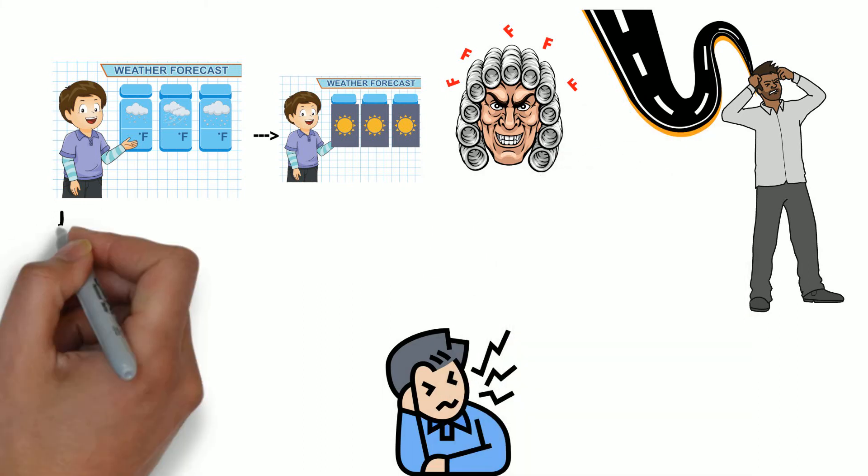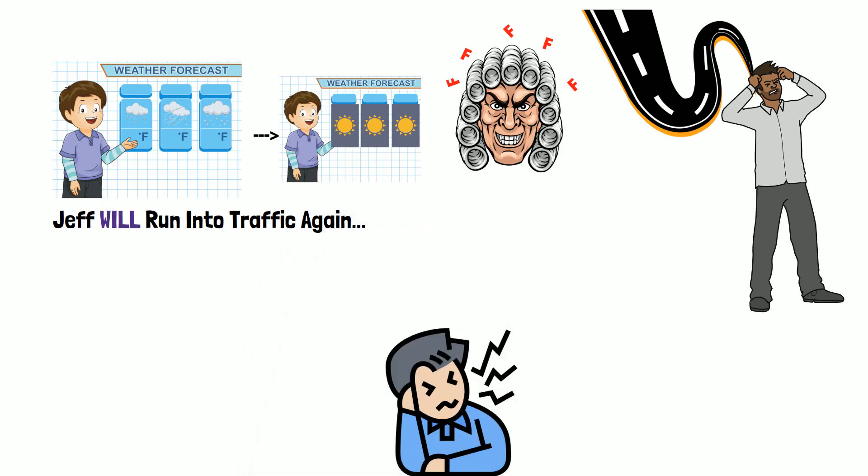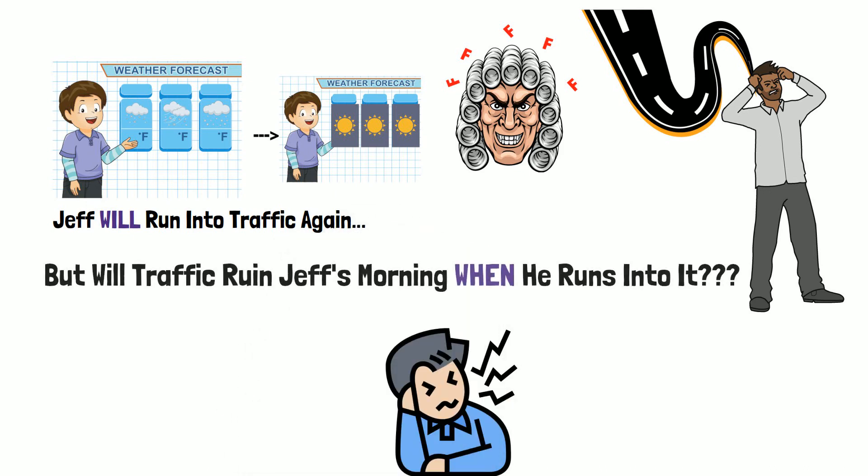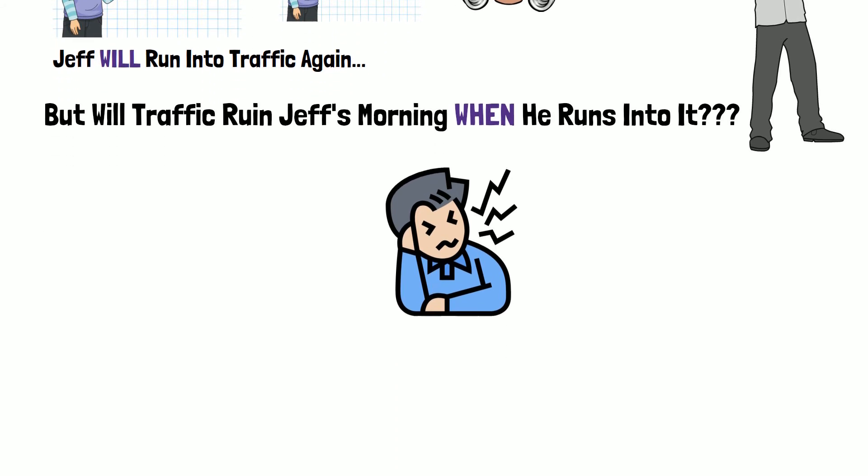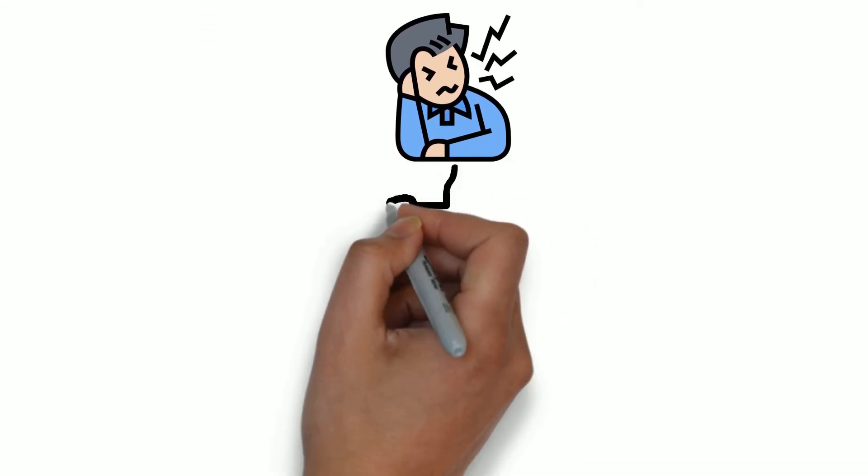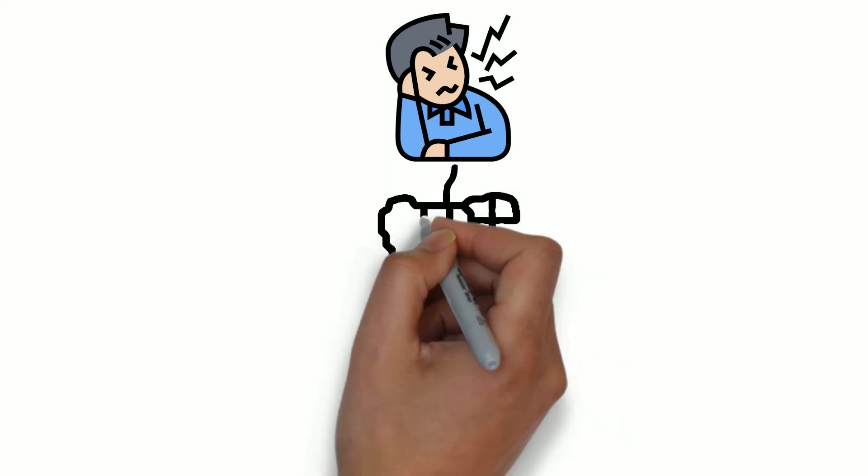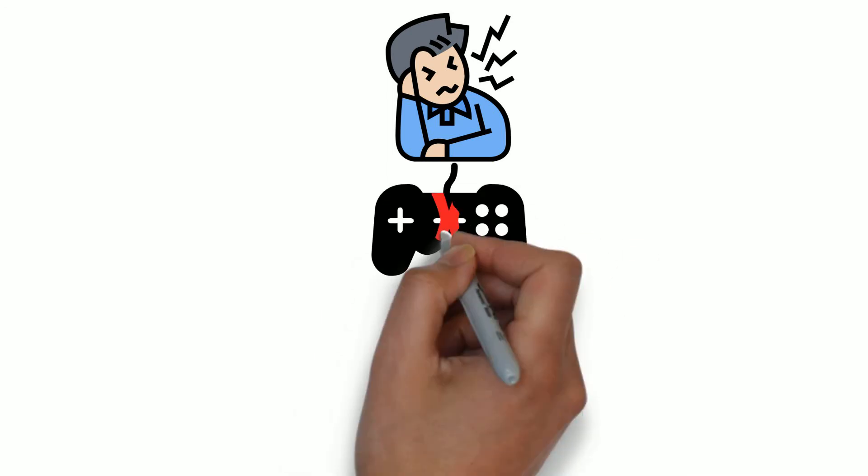Jeff will run into traffic again. That's not the question. The question is whether or not Jeff will allow traffic to ruin his morning. We've got to accept these things as a part of life and expect them to happen. In the name of accepting them as a part of life and expecting them to happen, they lose 100% of their influence on us.